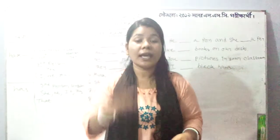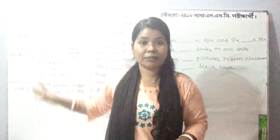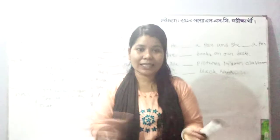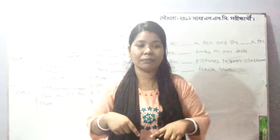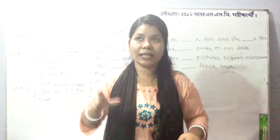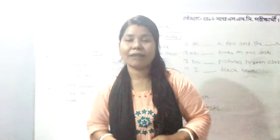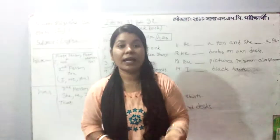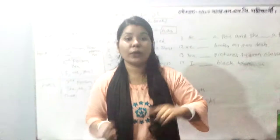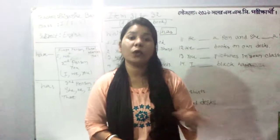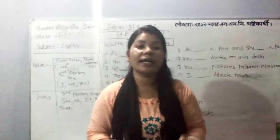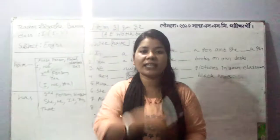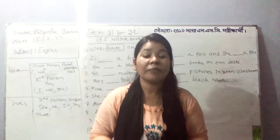So let us go through the class. First of all, item number 31 and 32 from the workbook — these items are given in one graph. In this chapter you will learn the use of 'have' and 'has': where to use 'have' and where not to use 'have', and where to put 'has' and where not to put 'has'. This is the main theme of today's class.